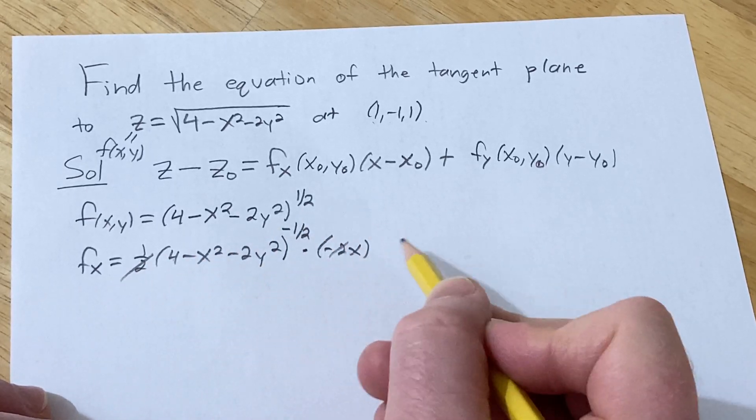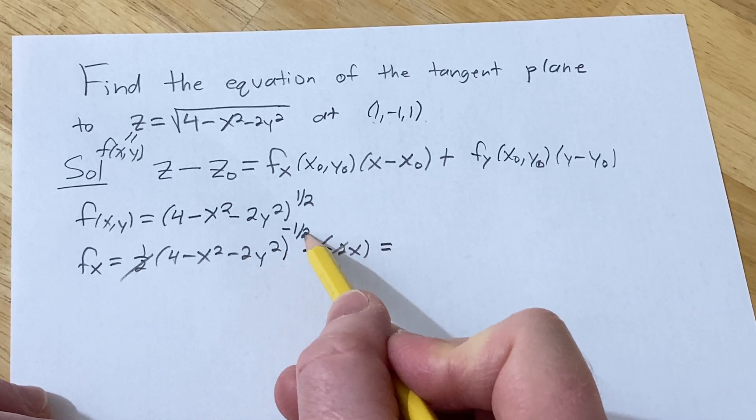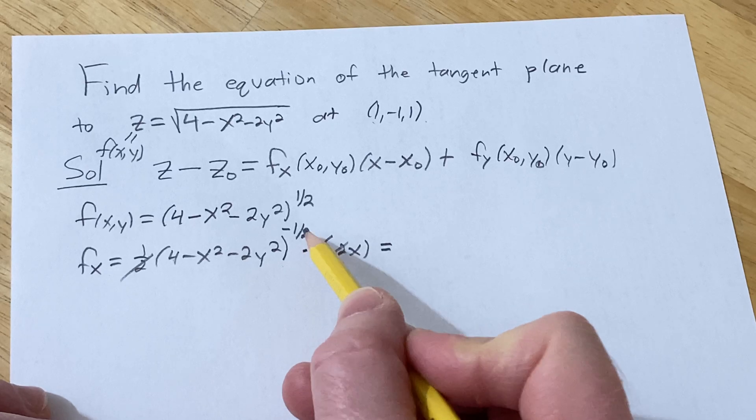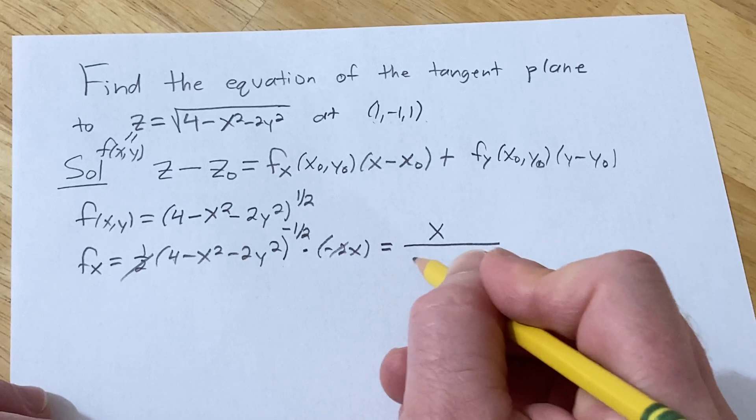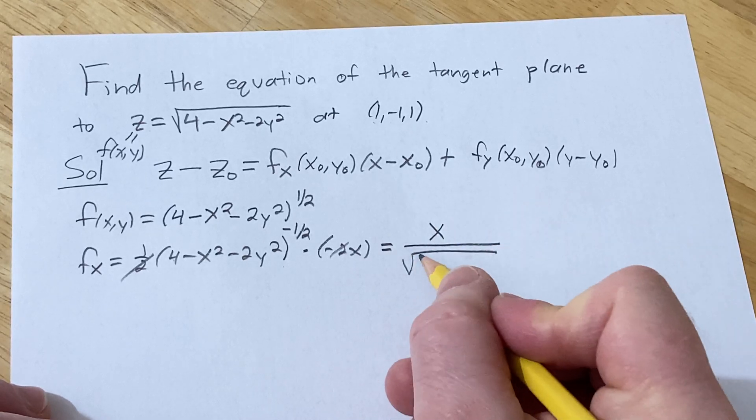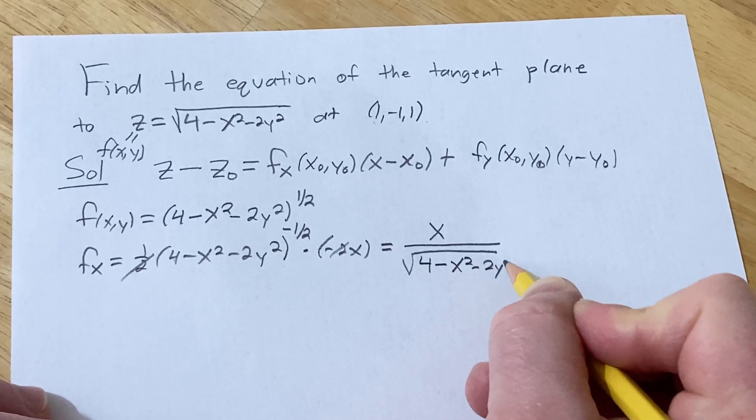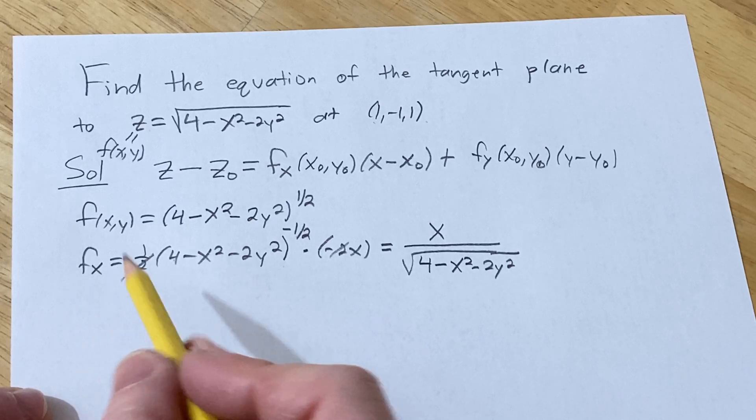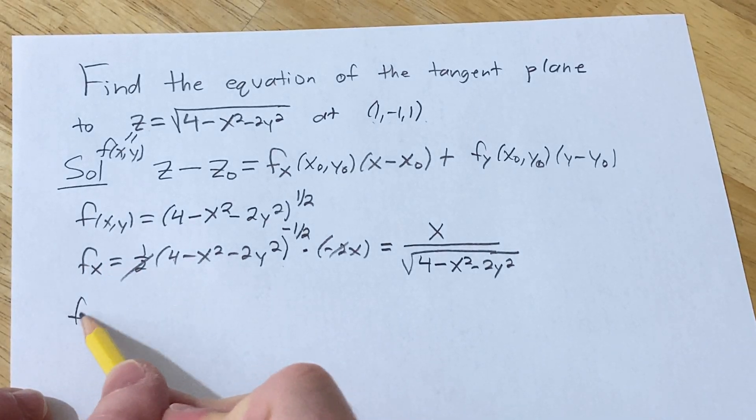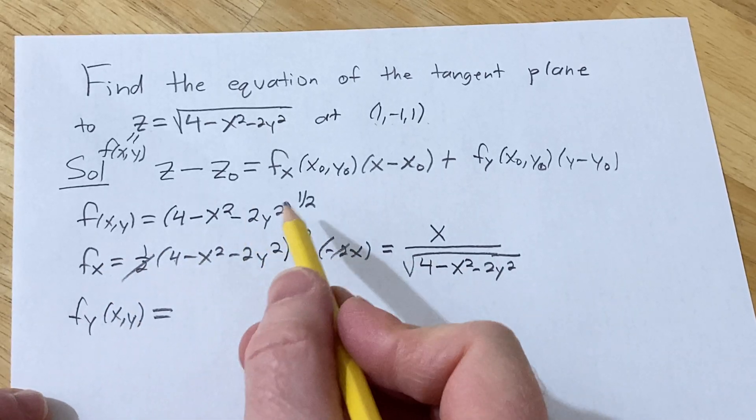You can clean this up and bring this downstairs and turn it into a square root. When this comes downstairs, it becomes a one half power, which can be written as a square root. So this is -x over the square root of 4 - x² - 2y². Notice I didn't put the xy, I'm just being lazy, so I'll do it here, fy(x,y). I just omitted it here out of just pure laziness.